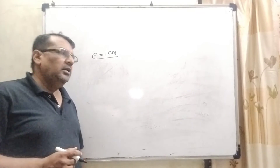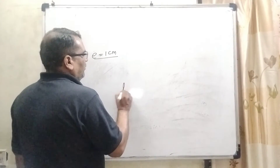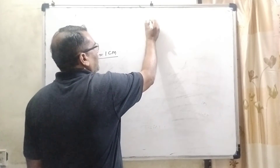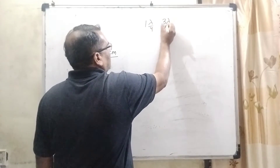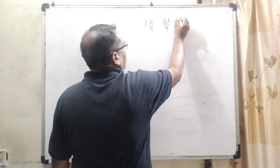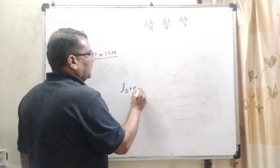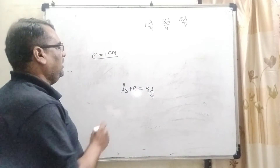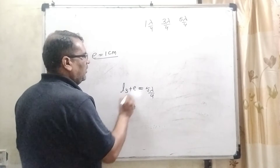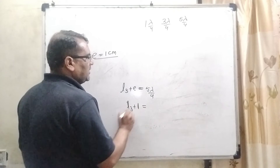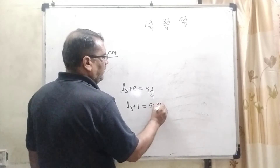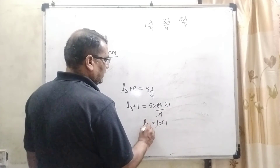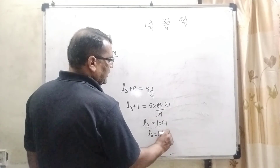Now we have to find the length of the tube at the third resonance. For the third resonance we use L3 plus E equal to 5 lambda by 4. The end correction is already found to be 1 centimeter and lambda is 84 centimeters. So 5 times 84 by 4 equals 105, and therefore L3 equals 105 minus 1, giving L3 equal to 104 centimeters.